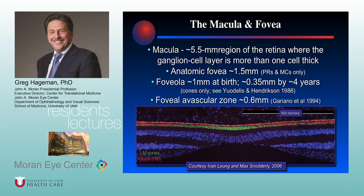As you move further into the periphery, the ganglion cell layer goes to one or two cells. The dead-center anatomic fovea is about 1.5 millimeters in diameter — the region that contains only photoreceptors and glial cells. The foveola is a subsection where there are absolutely no rod photoreceptors. This dead-center region, about a third of a millimeter in diameter, is your foveola.